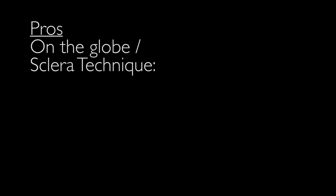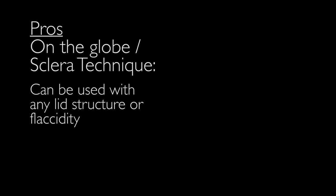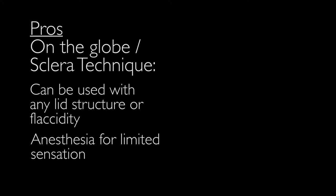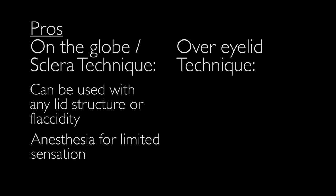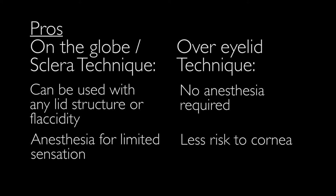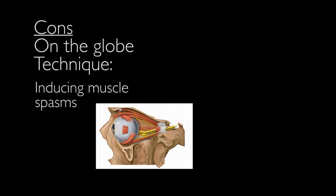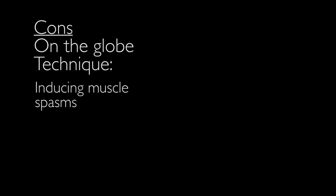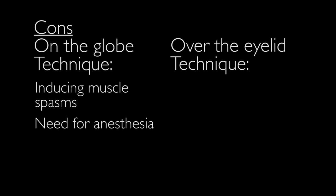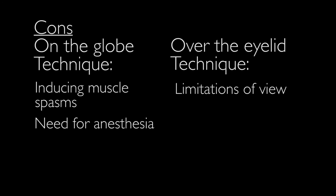Pros for the on-the-globe technique include compatibility with any lid structure or flaccid eyelids, and that the eye is anesthetized, limiting sensation. Pros for the over-the-eyelid technique include no anesthesia required and less risk to the cornea. Cons for the on-the-globe technique include potential muscle spasm (charley horse) if a rectus muscle is pinched, and the need for anesthesia. Cons for the over-the-lid technique include limitations of view and more pressure needed on tighter lids. Familiarity with both techniques is recommended.